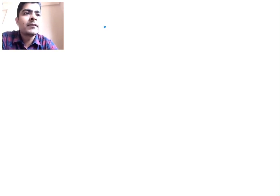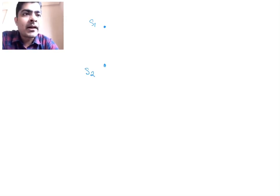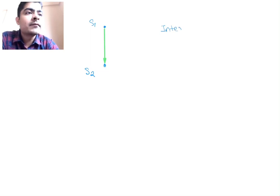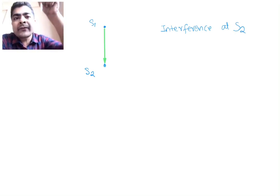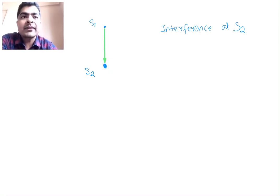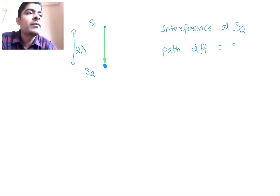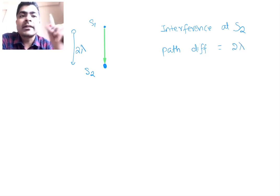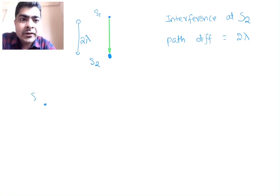Let's consider interference at s2 itself. One wave comes from s1 and reaches s2; the second wave starts at s2 itself, so the path covered by s2 is 0, but the path covered by the wave from s1 is s1-s2, which equals 2 lambda. So the path difference at s2 is 2 lambda.